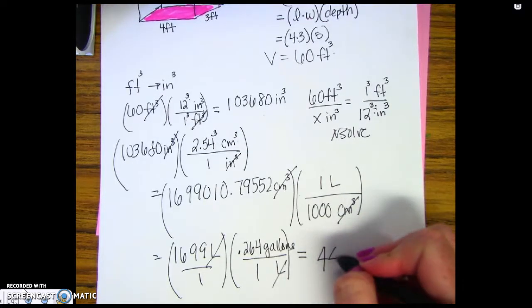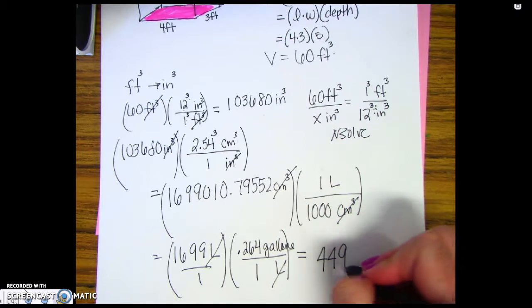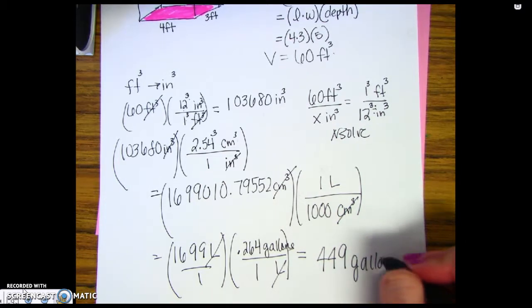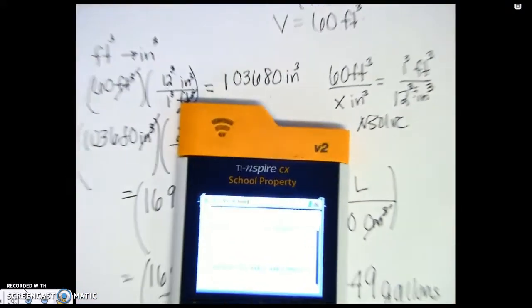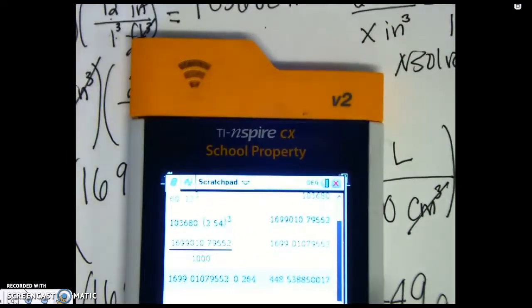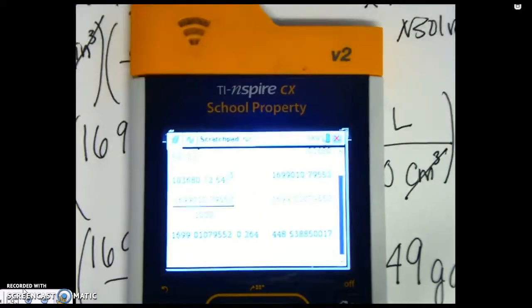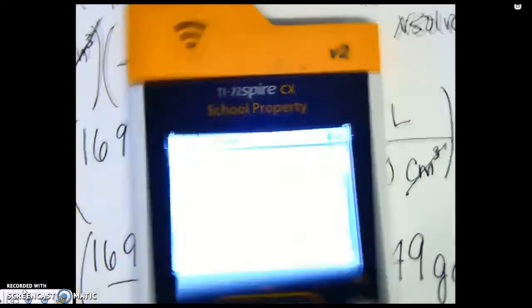So I'm going to round up. 449 gallons. And I'm rounding that up because it was 448.5, so to the nearest gallon, I'm making that 449 gallons.